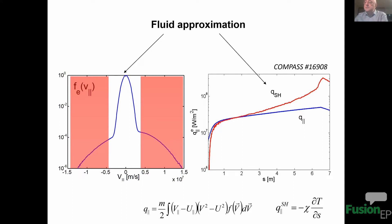On the right-hand side I draw two plots: the parallel heat flux defined in the scrape-off layer of the COMPASS tokamak in a real discharge. The blue one is a very precise kinetic simulation, and the red one corresponds to the fluid model — the so-called Spitzer-Härm model of the heat flux. You can see that in the center of the scrape-off layer the fluid model overestimates actual values by an order of magnitude, and near the wall it underestimates. The question is how important these over- and underestimations are.